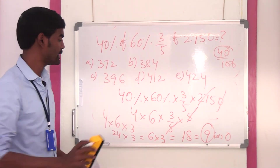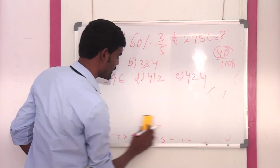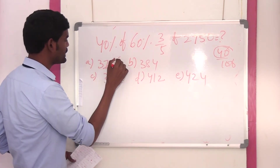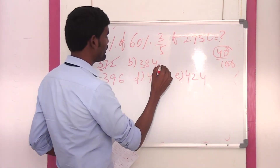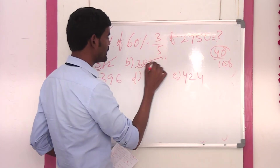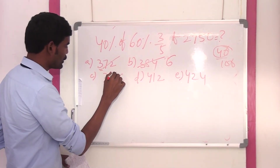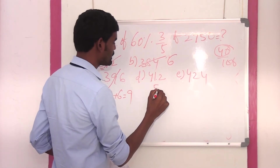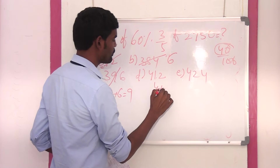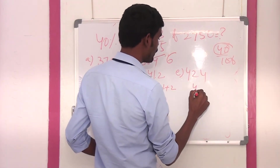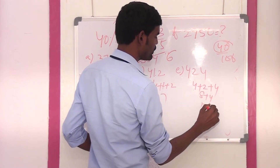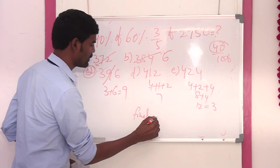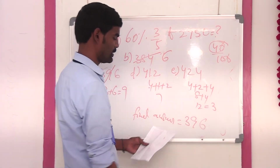We check each option. Option A 372: 3 plus 4 is 7, plus 15 — digit sum is 6. Option B 384: digit sum is 6. Option C 396: 3 plus 9 plus 6 — 9 cancelled, 3 plus 6 is 9. So option C gives digit sum 9, which matches. The correct answer is 396.